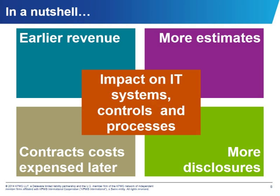So how about key takeaways? For telecommunication companies, revenue will overall be recognized earlier while costs will probably be recognized later. The new guidance involves much more estimates and judgments, and companies will also have to disclose much more information. Overall, we expect a lot of impact on IT systems and controls, as well as processes, and we encourage telecommunication companies to start their implementation process as early as they can.